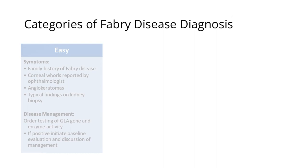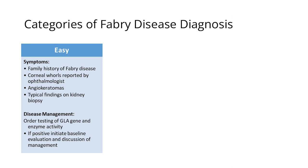The easy ones are people who come in and say they have a family history of Fabry disease, and then you work them up. Or if they have some of the more specific findings like angiokeratomas — which are purple spots on the skin, most commonly around the belly button or in the inguinal creases — or corneal whorls, which can be seen on a slit lamp with an eye exam. If you have those things, then everybody who's at risk by pedigree should be tested, and it's easy to make the diagnosis.